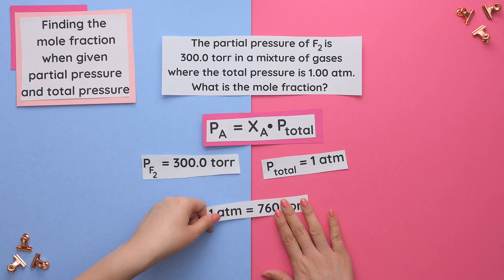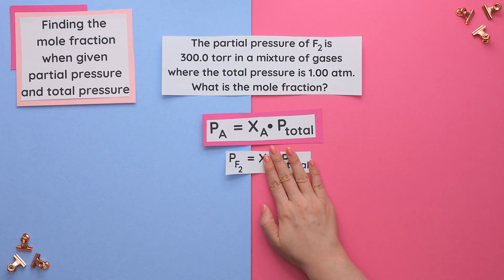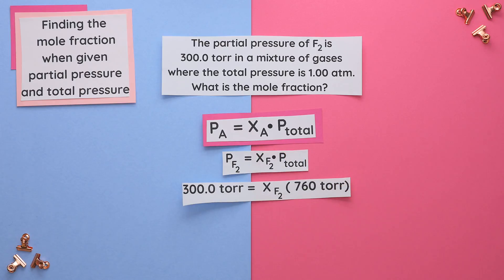Remember that one atmosphere is equal to 760 Torr, so our total pressure can be rewritten as 760 Torr. Now that all the units are the same, we will plug everything into our formula and solve for the mole fraction. Divide both sides by 760 Torr, and our mole fraction is this.